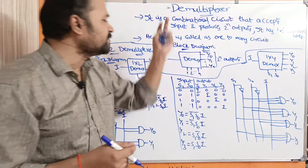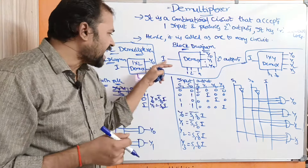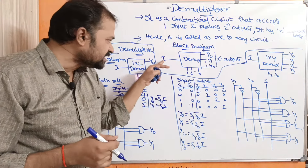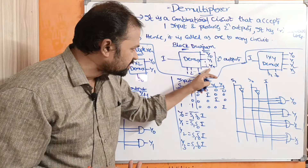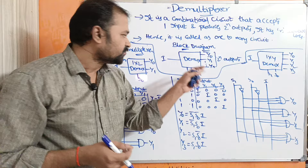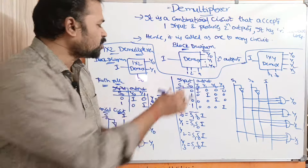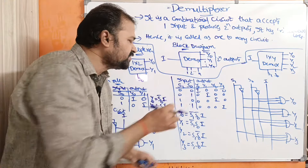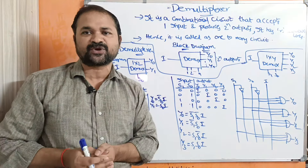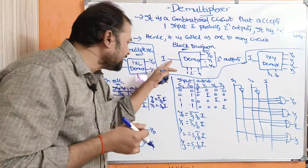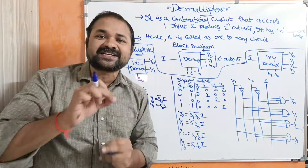Let us see the block diagram of the demultiplexor. A demultiplexor can also be called a demux. It accepts one input — let that input be i — and it produces various outputs such as y0, y1, and so on up to yn, for a total of 2^n outputs. We have n selection lines. One input will be connected as the output depending upon the selection lines.